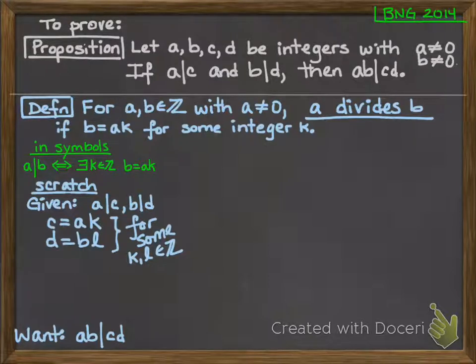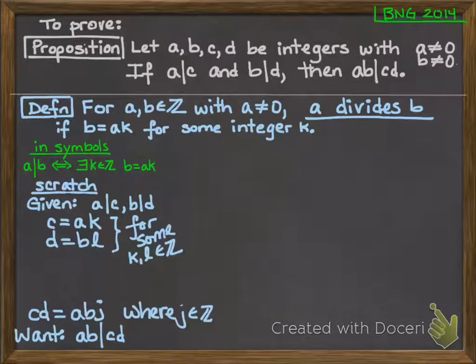So I started with my given information. I used the definition to write it in simpler terms, and that's sort of as far as I can go there. So now I'll go back down to my conclusion. From that conclusion, ab divides cd, I can apply the definition again to say that cd is equal to ab times j, where j is some integer. And again, I can't use the letter k or the letter l because I've already used those above. And in the definition, it just says for some integer k, but I can't assume anything extra about it, so I can't assume it equals the other ones.